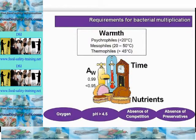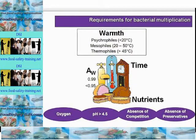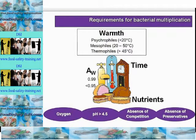Listeria monocytogenes at 4 degrees Celsius has a TG of 30 hours and a lag phase of 2 days in milk. Importantly, pathogens do not affect the taste, colour, texture, or look of food — and therein lies the problem. We don't know they are there until it's too late, until we are suffering from food poisoning symptoms.